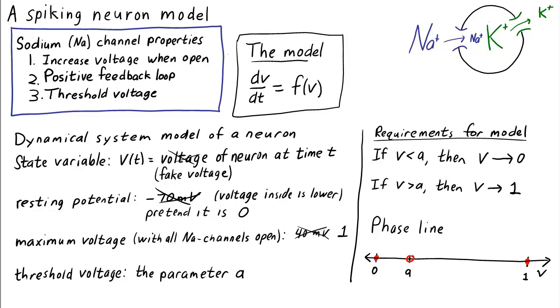We want the vector field, or direction arrows, pointing away from A and toward both zero and one. In this way, the voltage will move upward if it is above A and downward otherwise, assuming we stay between zero and one.